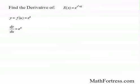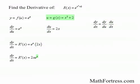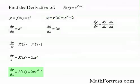Using Leibniz notation, we let y equal e to the u, so dy over du equals e to the u. We let u equal x squared plus 2, so du over dx equals 2x. That means dy over dx equals e to the u times 2x. Substituting u with g of x, the final answer is 2 times x times e to the power of x squared plus 2.